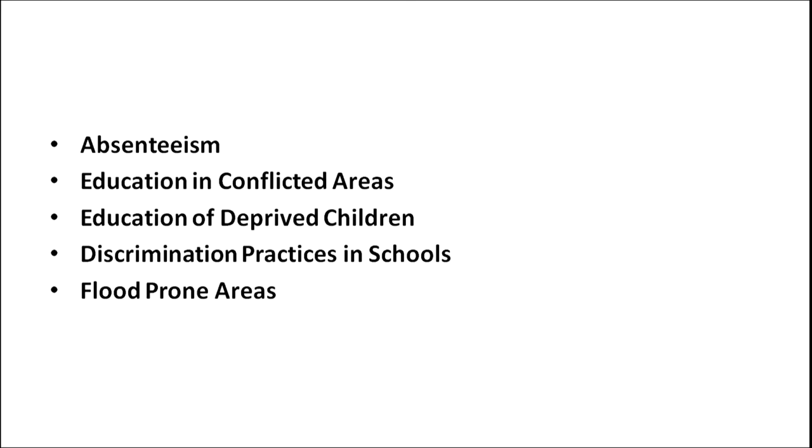When we talk about elementary education at the grassroots level, we have several issues. For example, absenteeism: as a result of absenteeism, a student loses interest in learning, becomes less motivated, and remains aloof from the educational system — and may be considered a potential dropout. Absenteeism is a very serious issue, and community members play a vital role in retaining students and in trying to understand why some students are absent from school.